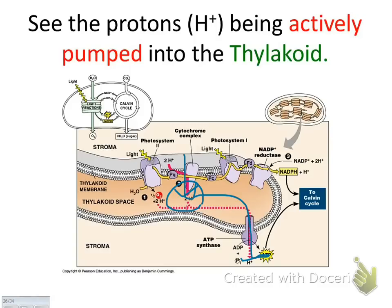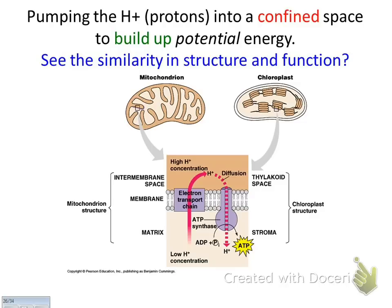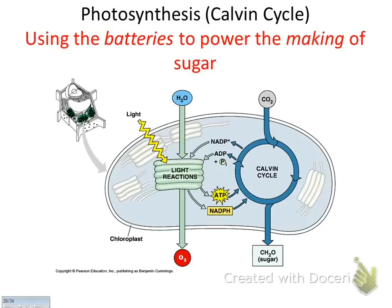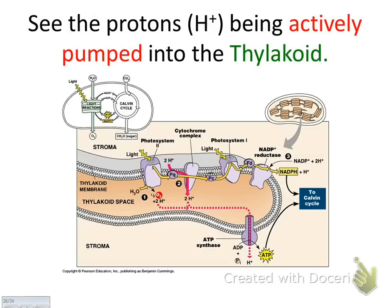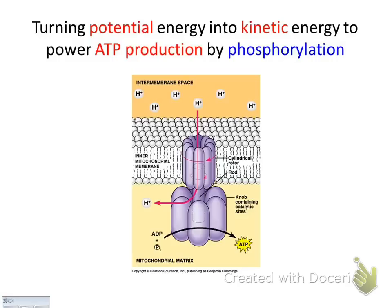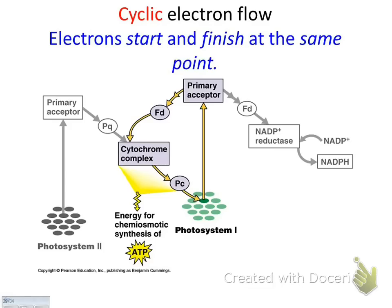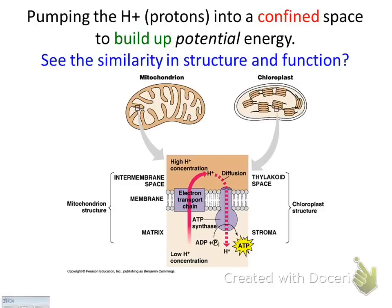ATP and NADPH are made. To sum up the light reaction: sunlight comes in, splits the water, electrons go through the electron transport chain, hydrogen ions turn ATP synthase, and that makes ATP. This was a hard lecture, so we're going to do it again tomorrow in class. Don't be worried. Thank you.